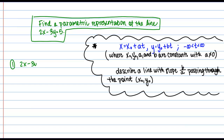I've got 2x minus 3y equals 5 and I want to find the slope of this line. Probably the most straightforward way to do this is just to solve this equation for y so that we get it into y equals mx plus b form. If I do that, I'm going to get 2x minus 5 equals 3y, and then I can divide everything by 3 and get y equals 2/3 x minus 5/3.